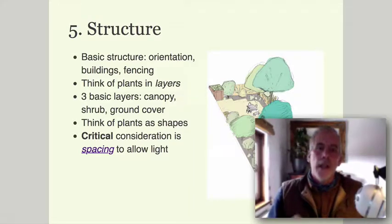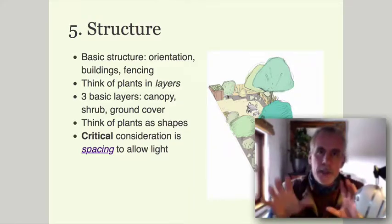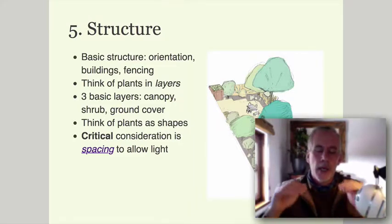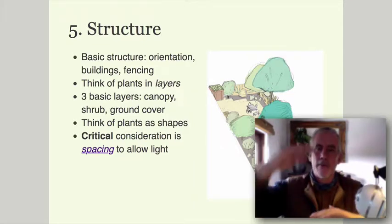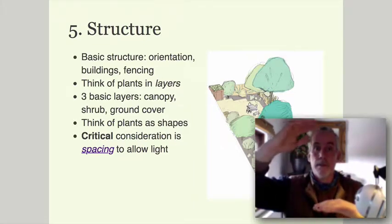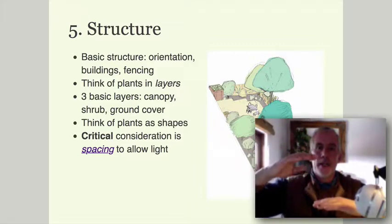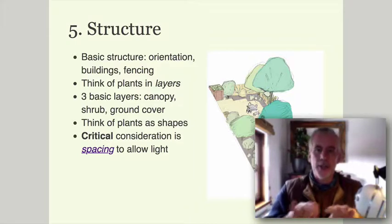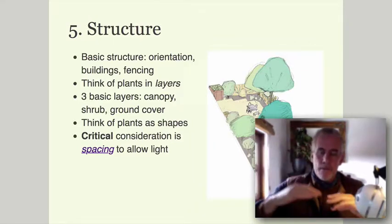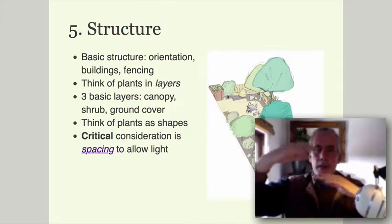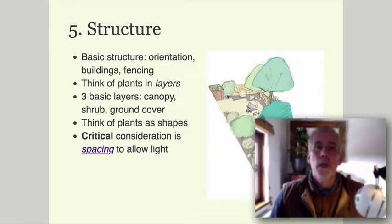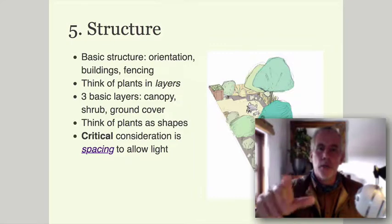When you introduce plants, think of them in layers. Forest gardening is very efficient in its use of space because there are seven layers in total, but you can think of it as three: the canopy layer — your big trees; a shrub or small tree layer; and then ground cover, herbaceous perennials, and lower ground cover. When thinking about where to put a plant, consider the space it occupies at that level and how much light comes through.